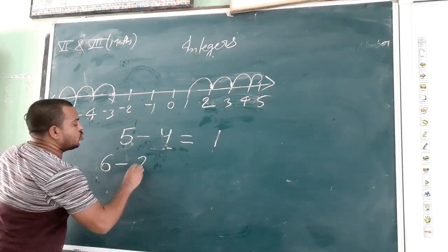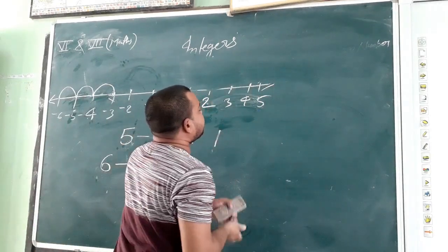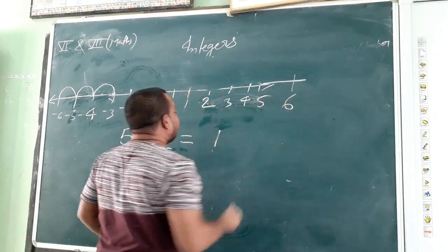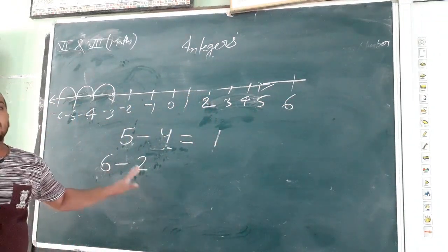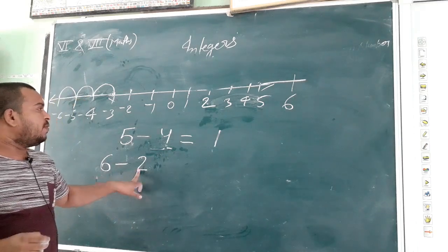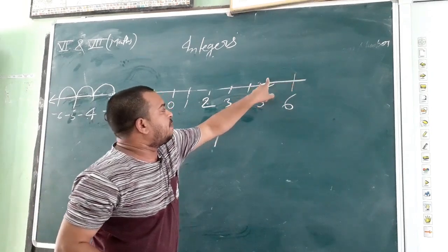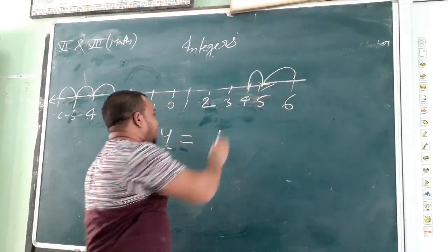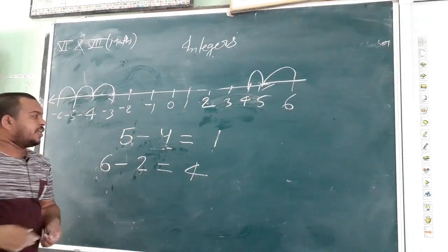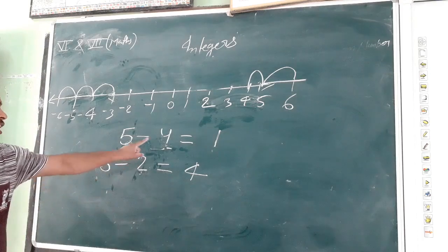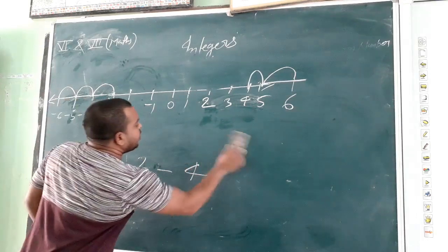Let's take another example: 6 minus 2. Subtracting a positive number means moving left, so we move 2 steps from 6. So 6 minus 2 is equal to 4. That is how we subtract a positive number on a number line.